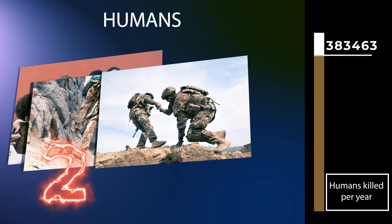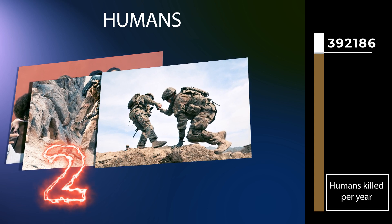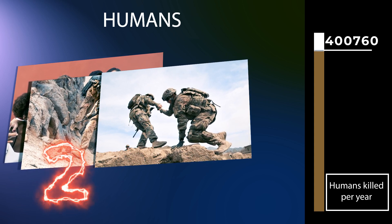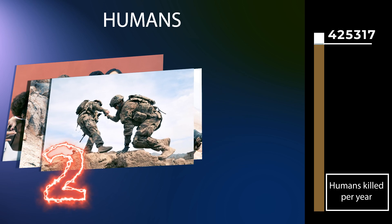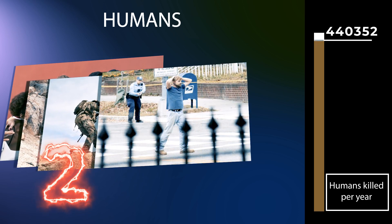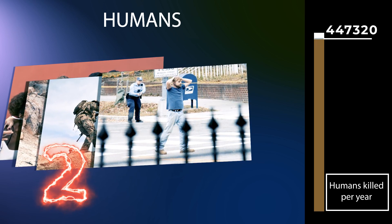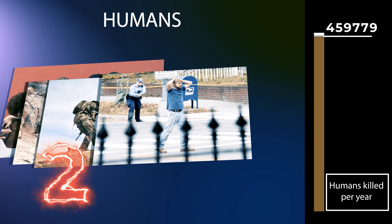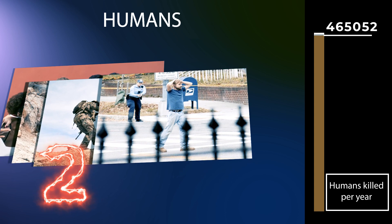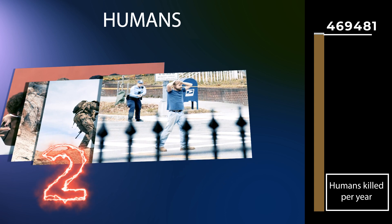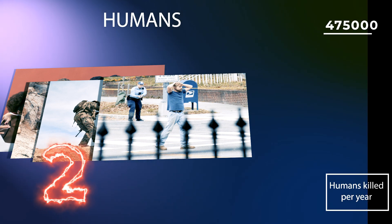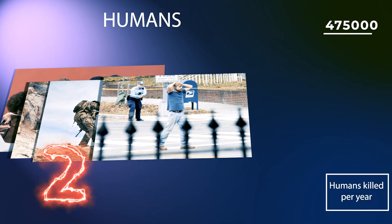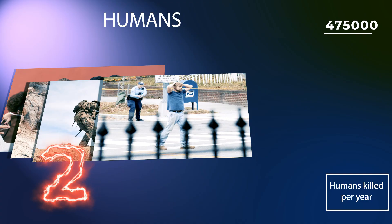While not settled, current evidence indicates warlike predispositions only became common about 10,000 years ago, and in many places much more recently than that. War has had a high cost on human life. It is estimated that during the 20th century, between 167 million and 188 million people died as a result of war.